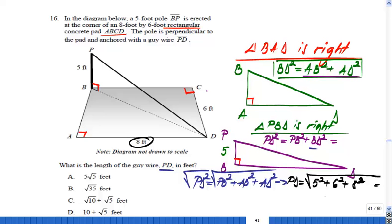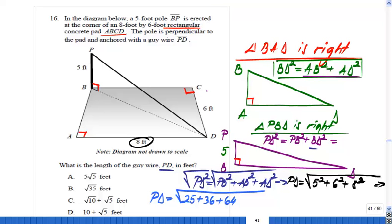This equals PD equals square root of 25 plus 36 plus 64. What's the easiest way to add these three numbers? 36 plus 64 is 100, so PD equals square root of 25 plus 100, which is 125.